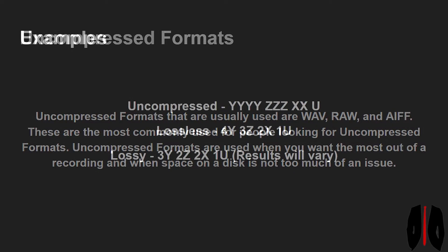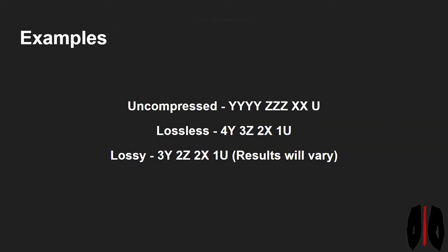Here is a quick example of uncompressed, lossless, and lossy audio. For uncompressed we have four Y's, three Z's, two X's, and one U. For lossless we have the exact same information, except that it is compressed but all the details are still there — so we still have four Y's, but it's written as '4Y' instead of 'YYYY'. The same goes for three Z's — written as '3Z' instead of 'ZZZ', and two X's written as '2X' instead of 'XX', and one U instead of 'U'.